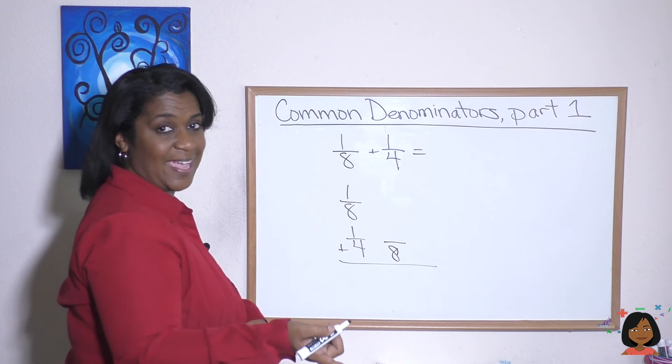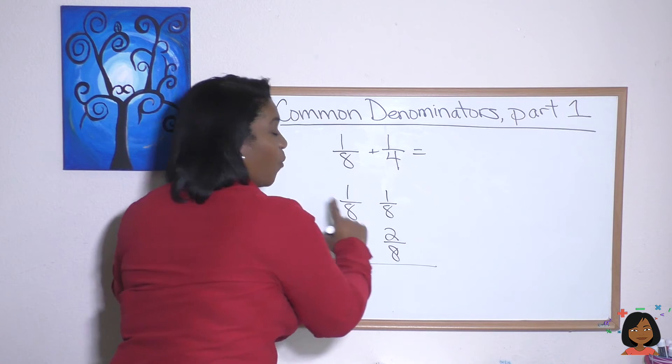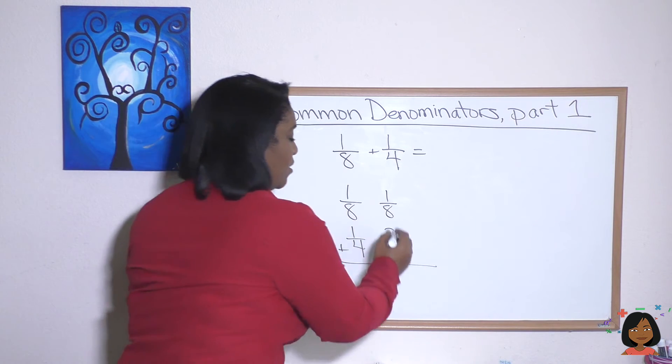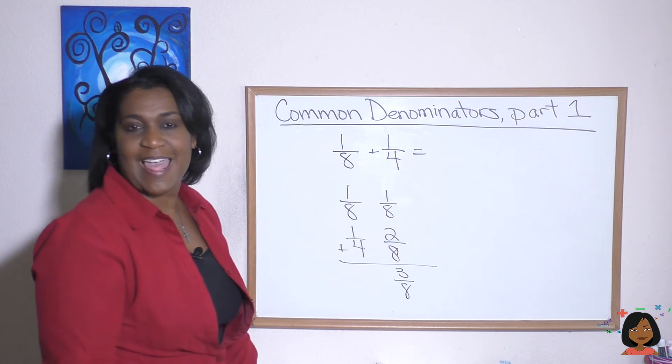Four times two is eight, so one times two is two. And we're just going to bring over that one-eighth. It already has eight as a denominator. Now we add: one-eighth plus two-eighths equals three-eighths. And that's it.